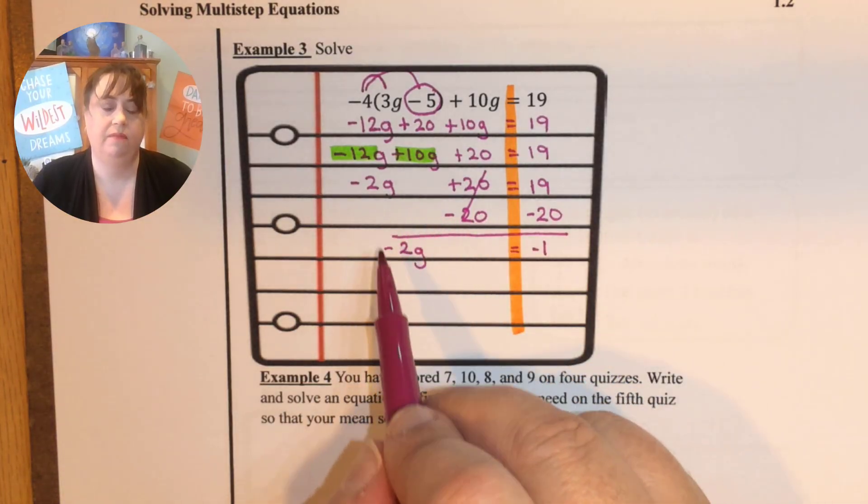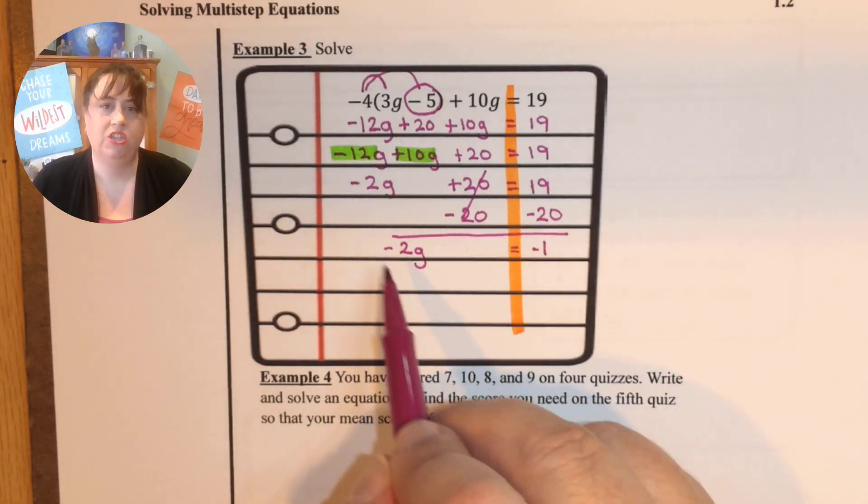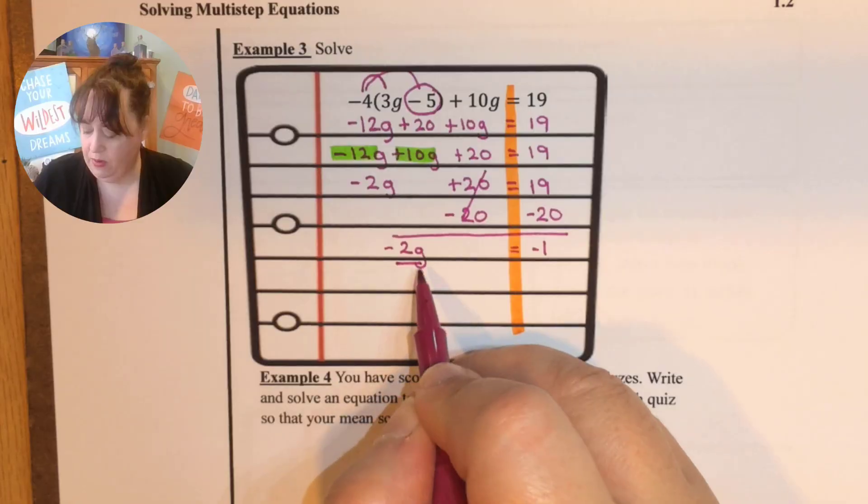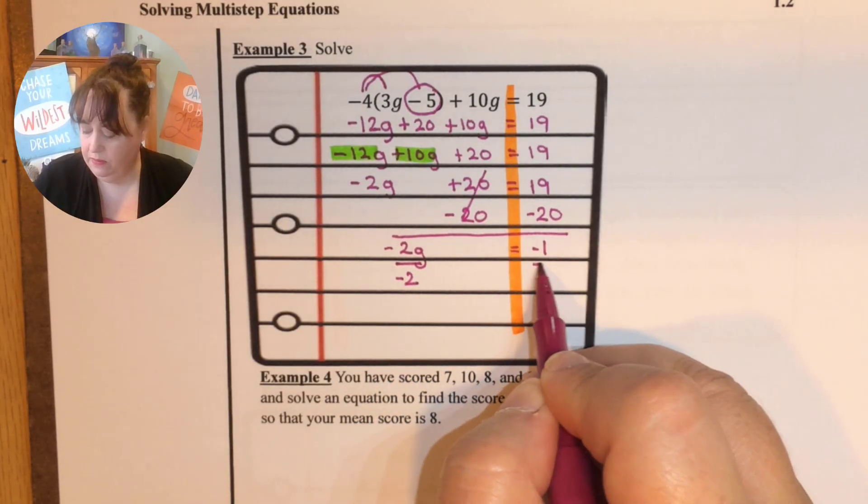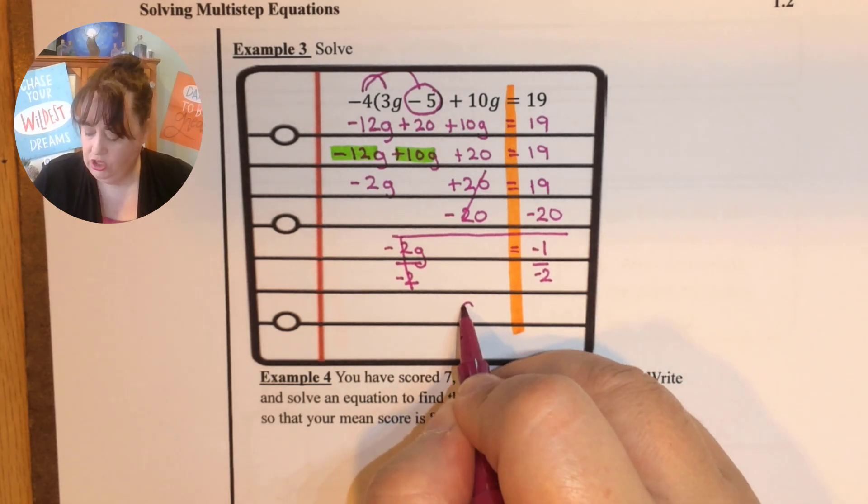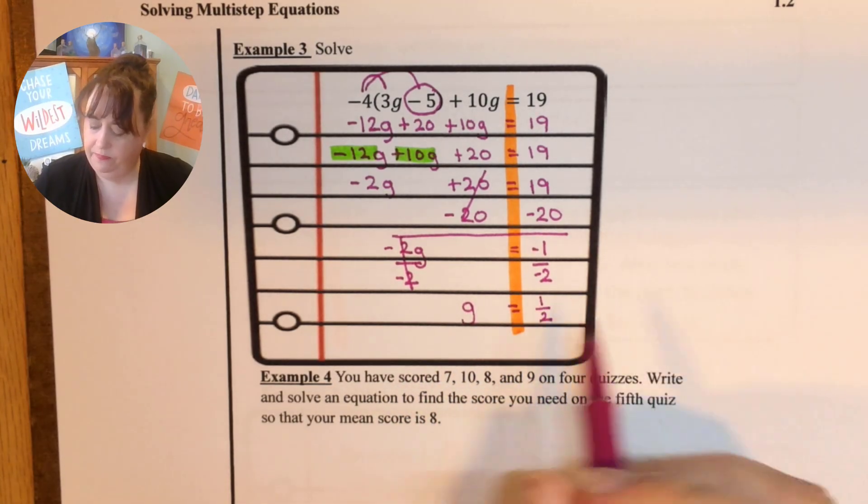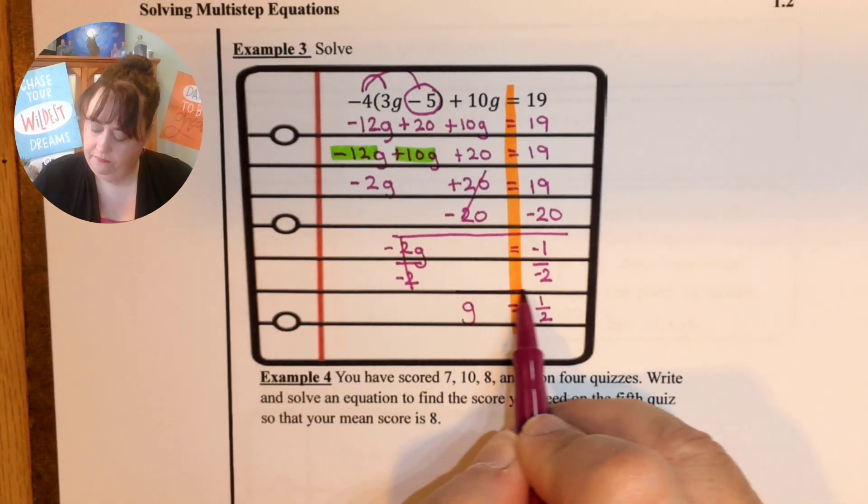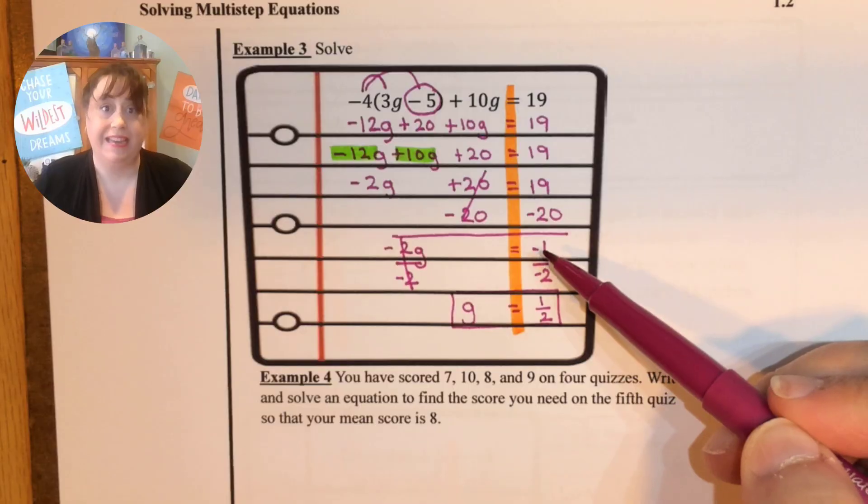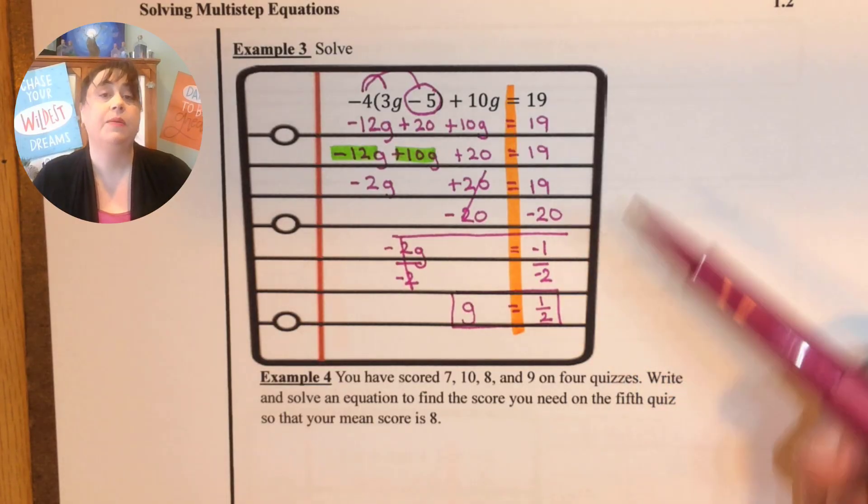Now we can mess with this. So how do we undo multiplication? We undo multiplication with division. So I'm going to divide both sides by negative 2. g is equal to 1 half. Why is it a positive 1 half? Because a negative divided by a negative is a positive.